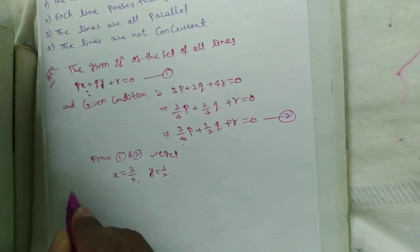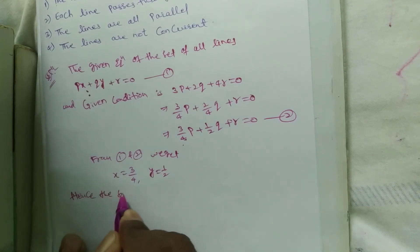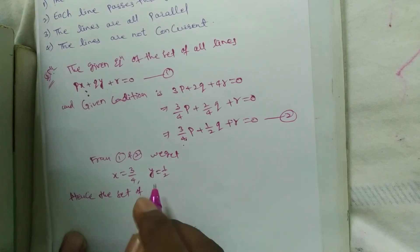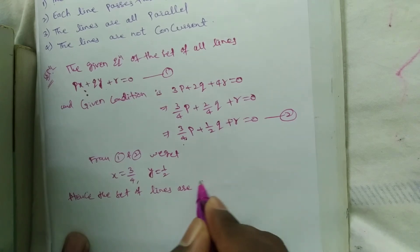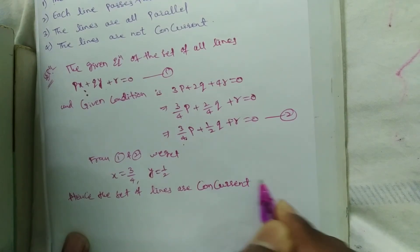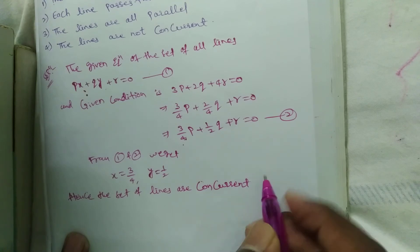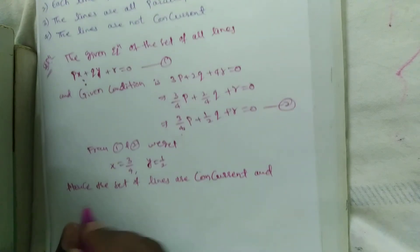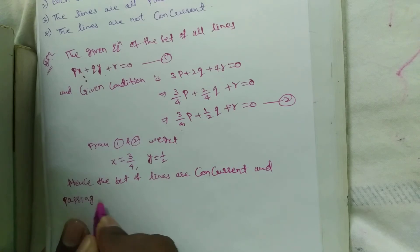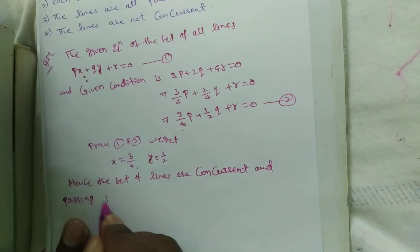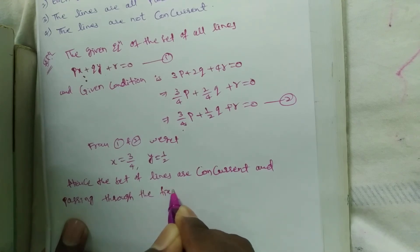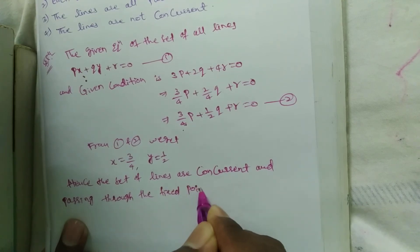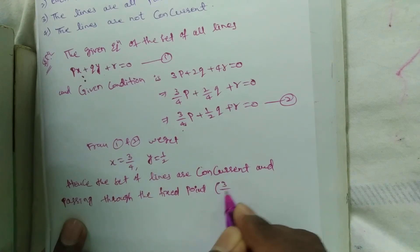Hence the set of lines are concurrent and passing to the fixed point 3 by 4 comma 1 by 2.